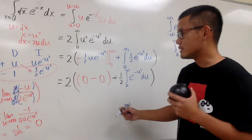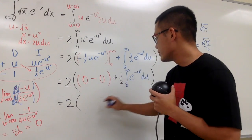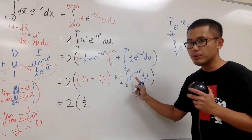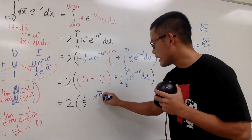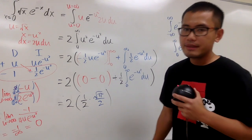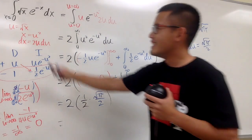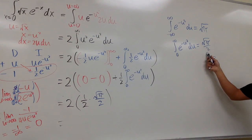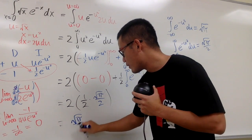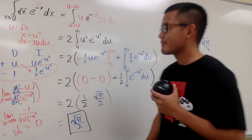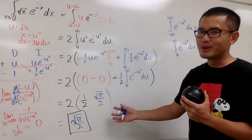Now we can finish: we have 2 times 1/2 times √π/2. The 2 and the 1/2 cancel, leaving √π/2 as the final answer. This is also a famous result — the integral from 0 to infinity of √x · e^(-x) dx equals √π/2. This is so cool!